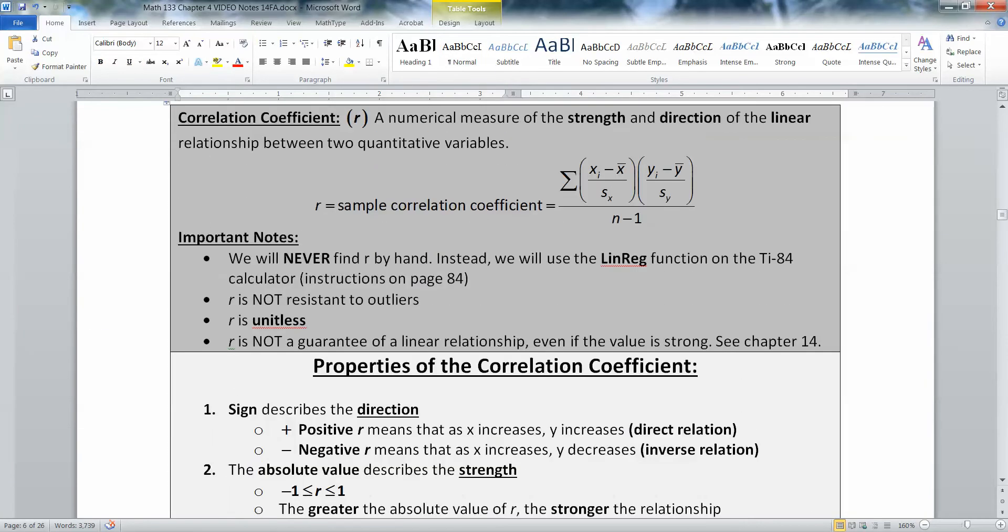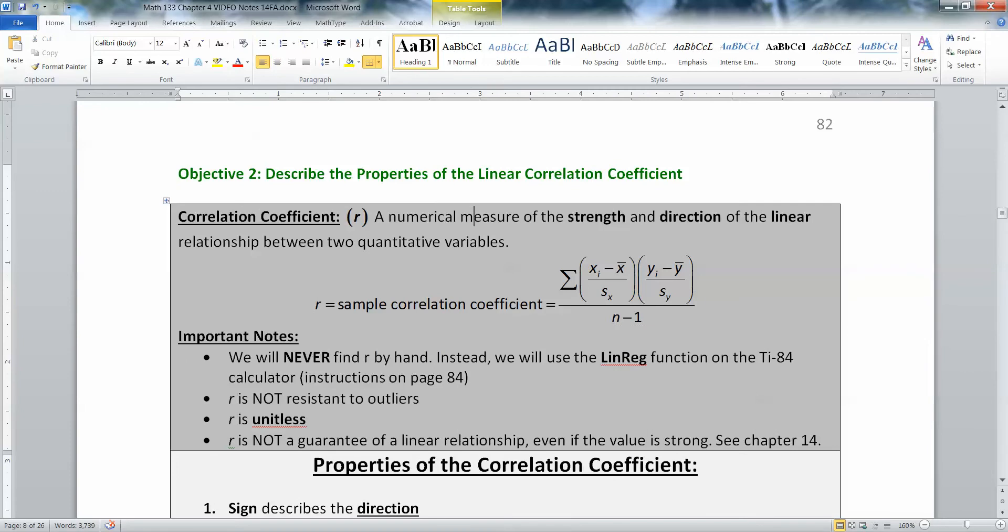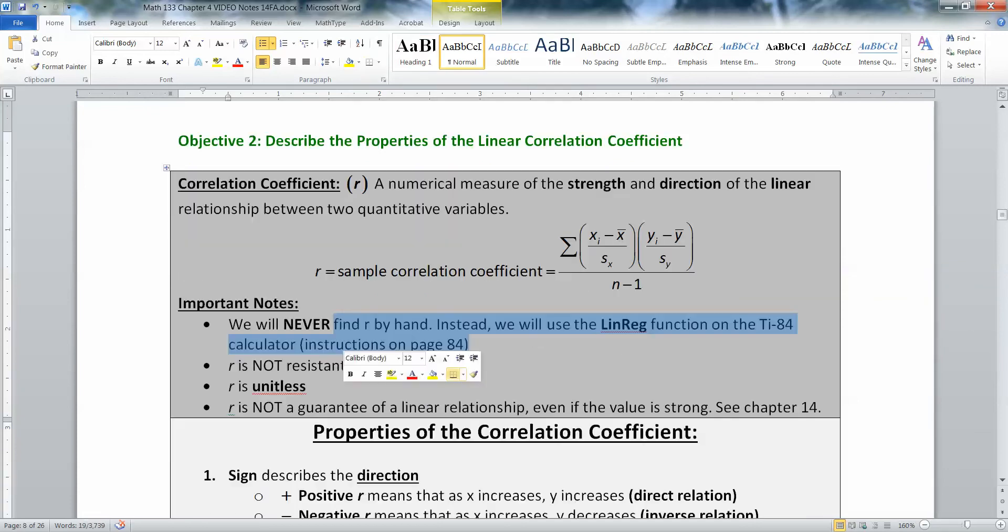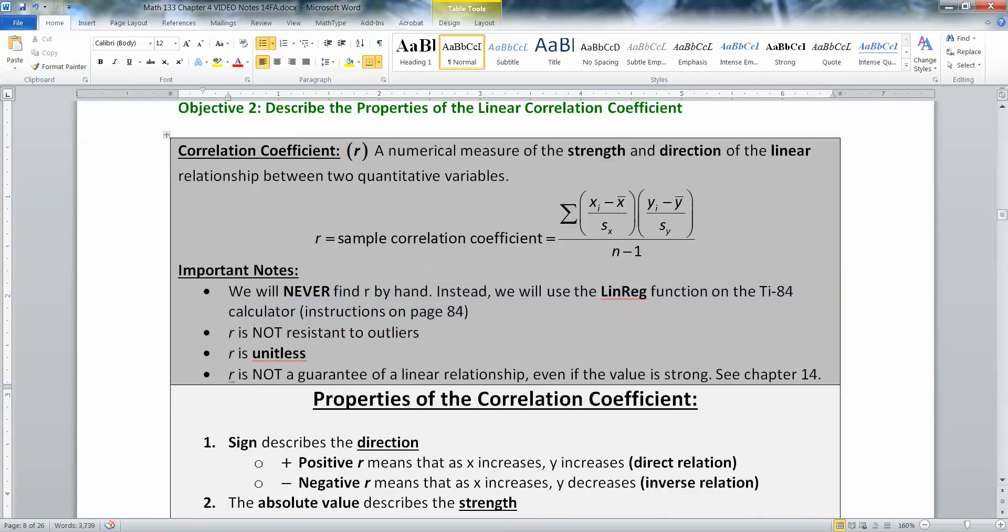The formula for it is kind of brutal. If you look at just the parentheses on the left, that's a z-score. Remember the formula for z-score from chapter three? So it's the z-score for every x value, then the z-score for every y value. Then you multiply them, add them all up, and divide by n minus 1. We are not going to do that because I'm very nice. We're going to use the Linn regression feature on the calculator, and we'll learn more about that a little bit later.